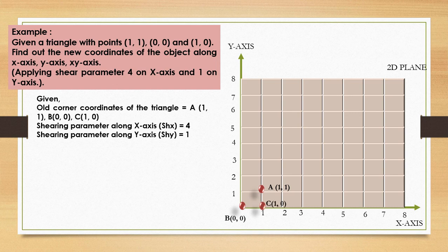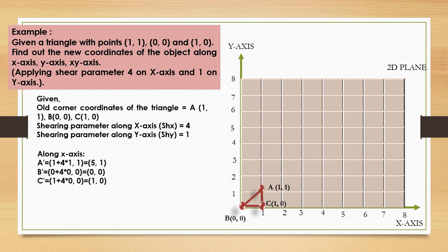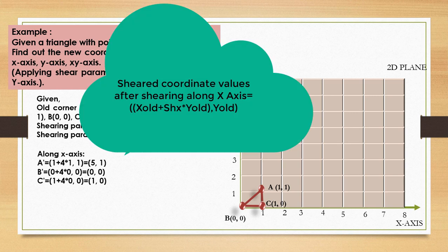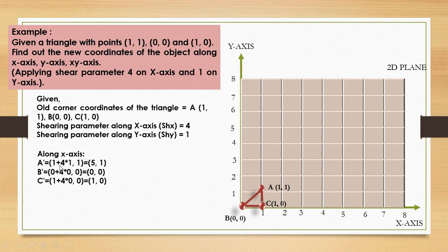After plotting A(1,1), B(0,0), and C(1,0) and connecting these points to create the triangle, we perform X shear. For A dash: x' = 1 + 4 × 1 = 5, and y remains 1, giving A' = (5, 1). We multiply the shear factor of the X axis by the Y coordinate value and add it to the X value to get the new X coordinate after shearing along X axis.